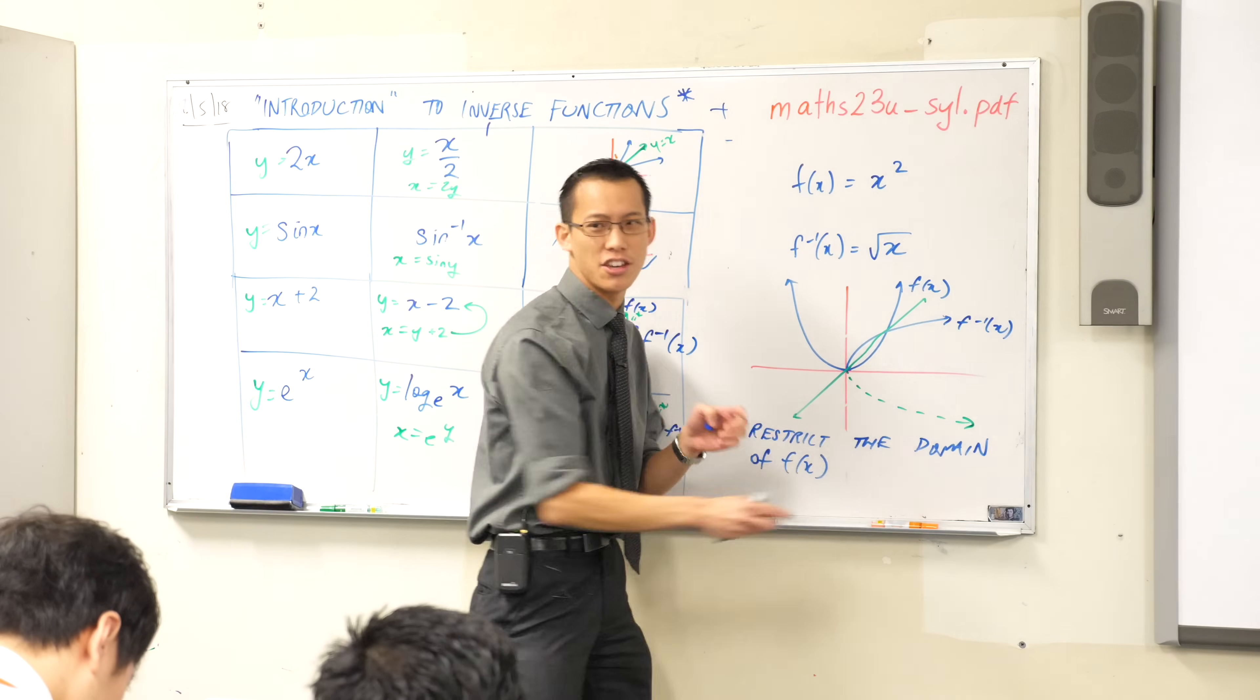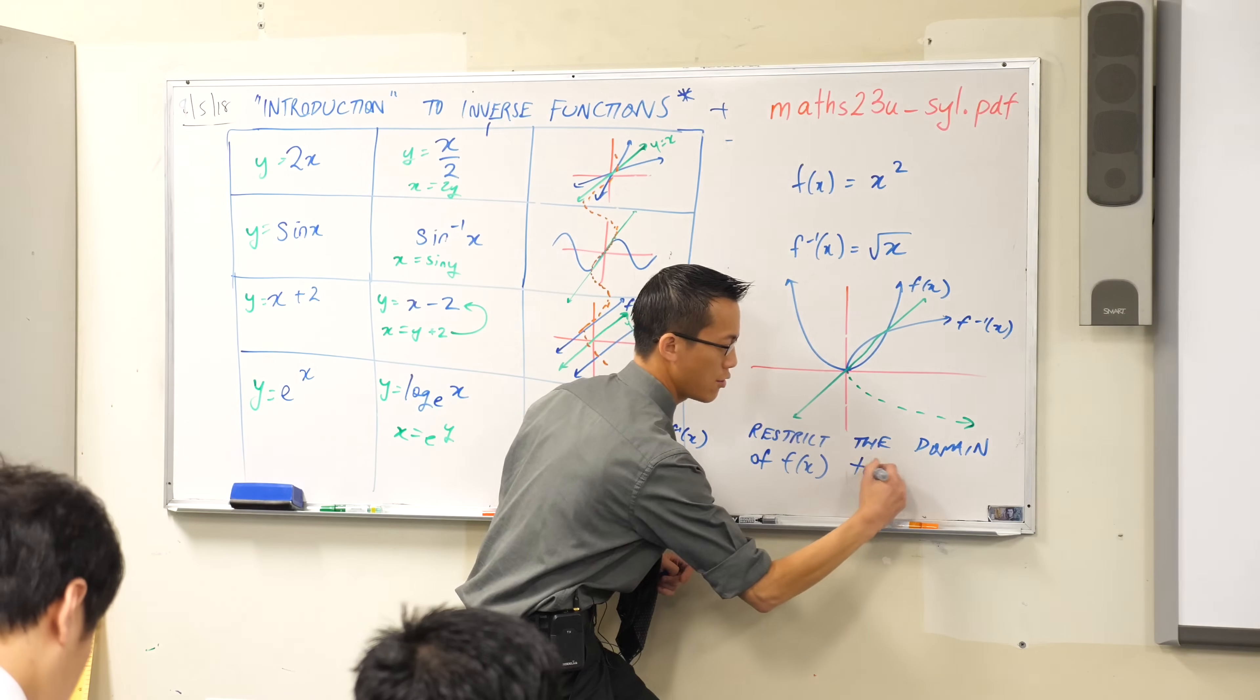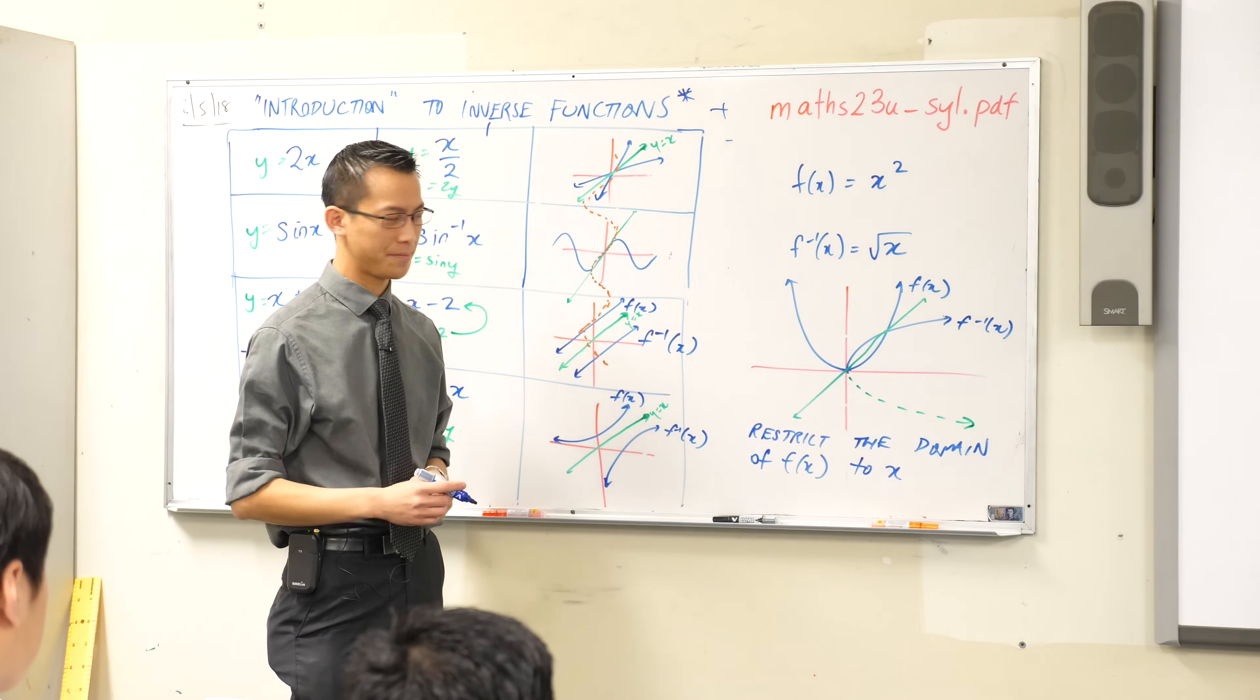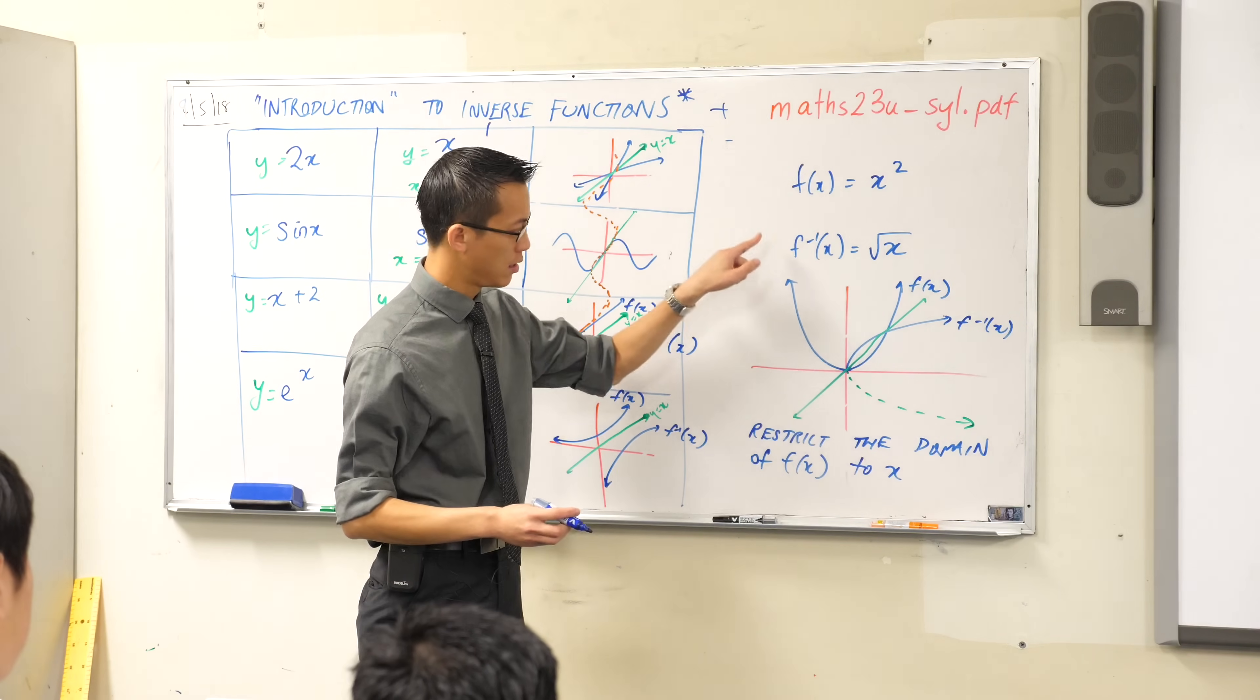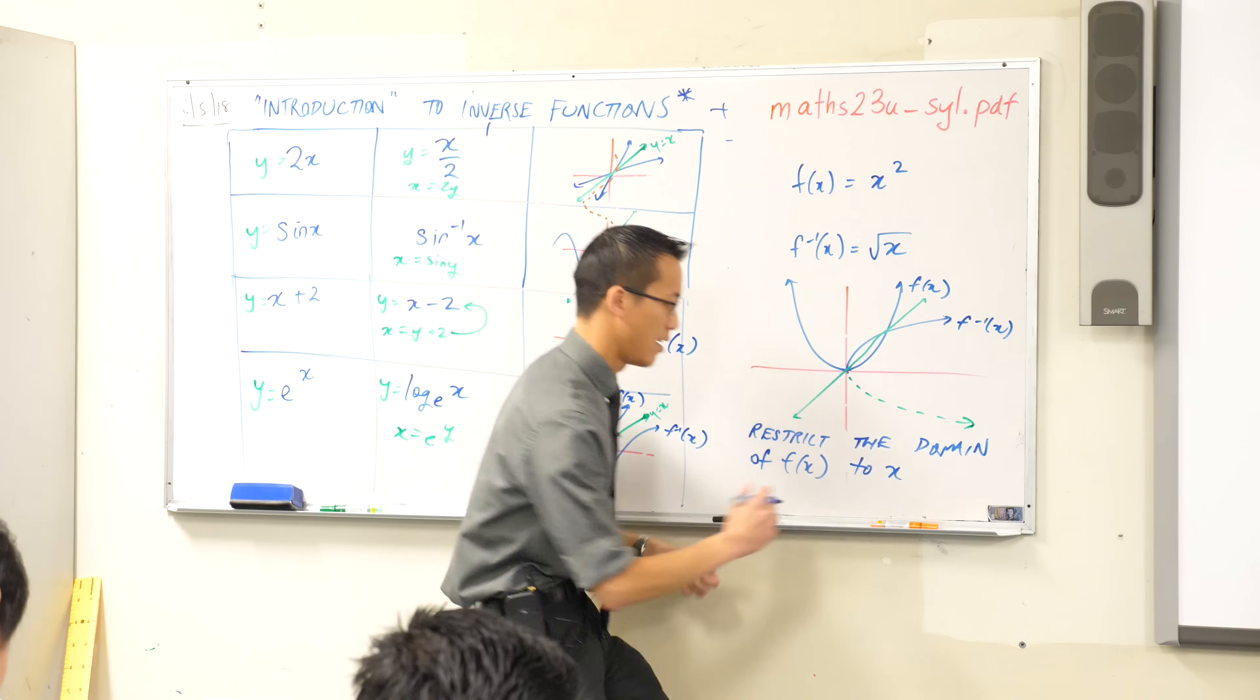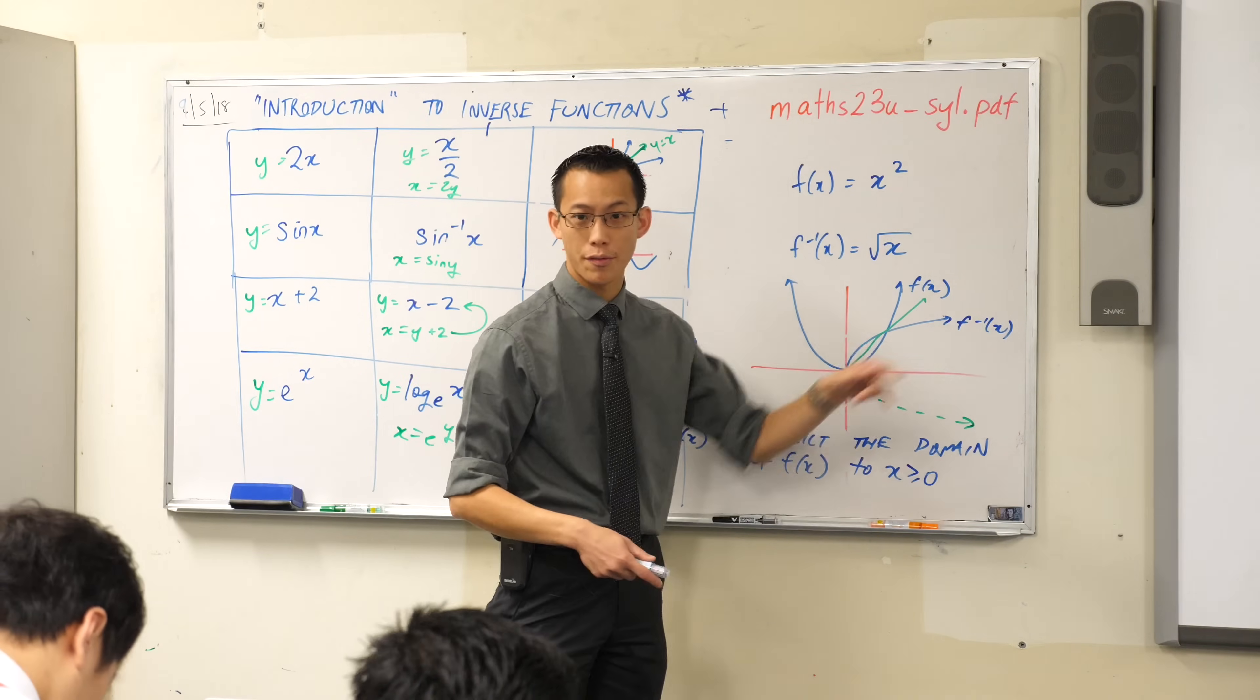It's x's. You can remember it's alphabetical, right? Domain and range, x's and y's. We restrict the domain of f of x to x is, hmm, have a look. Which part gets reflected? Does this part over here get reflected? Yeah, we want greater than or equal to zero. We're okay with zero. That guy's fine. So we're going to say x is greater than or equal to zero. We chose that part and then we reflected it.